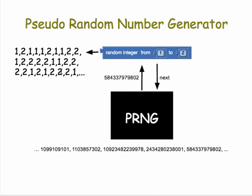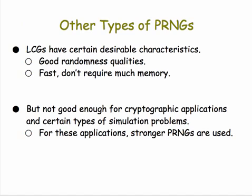That's how a pseudo-random number generator works in conjunction with our random integer block and other random blocks in App Inventor. LCGs are not the only types of PRNGs. They have pretty good randomness qualities and are fast and don't require much memory, but they're not good enough for certain computing operations such as cryptography, encryption, and certain types of simulation problems. For those applications, stronger PRNGs are used.